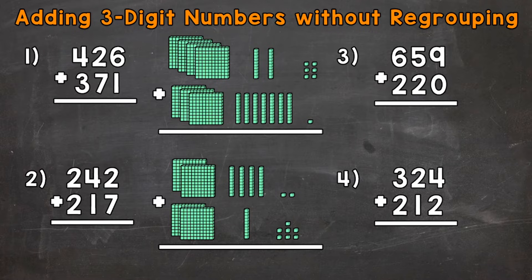So let's jump into number one where we have 426 plus 371. I have some base 10 blocks to the right of the problem to help us visualize exactly what's happening as we go through this addition problem. Now when we add, we always start with the ones place.